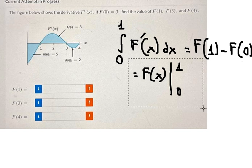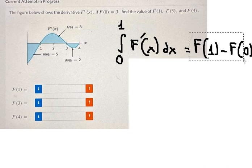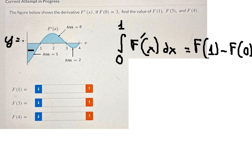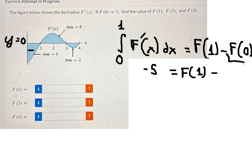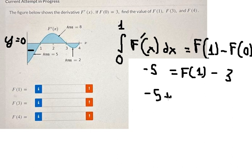After doing this, the area in here is negative five, because this region is below zero — it's a negative area. So we have negative five. F(0) is provided as three. So we have three plus negative five, which gives us negative two. We put negative two in here.